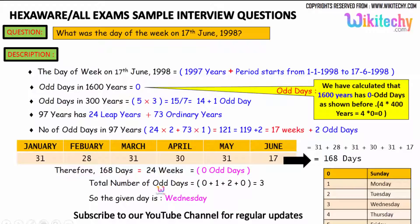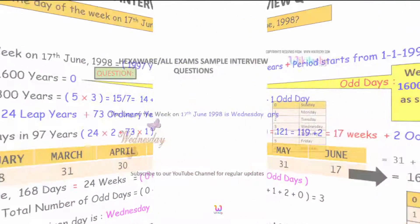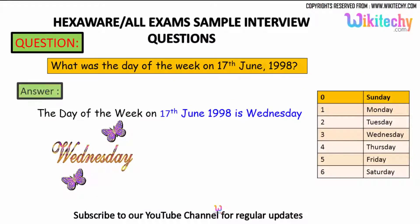The total number of odd days is: 0 (1600 years) + 1 (300 years) + 2 (97 years) + 0 (days in 1998 up to June 17) = 3 odd days. With 0 = Sunday, 1 = Monday, 2 = Tuesday, 3 = Wednesday — the day of 17th June 1998 is Wednesday. That's the answer.